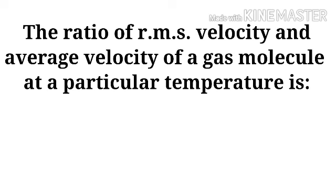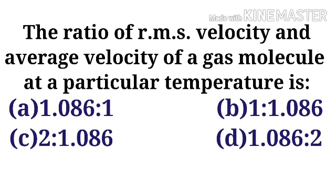The ratio of RMS velocity and average velocity of a gas molecule at a particular temperature is — Option A: 1.086 is to 1, Option B: 1 is to 1.086, Option C: 2 is to 1.086, Option D: 1.086 is to 2.